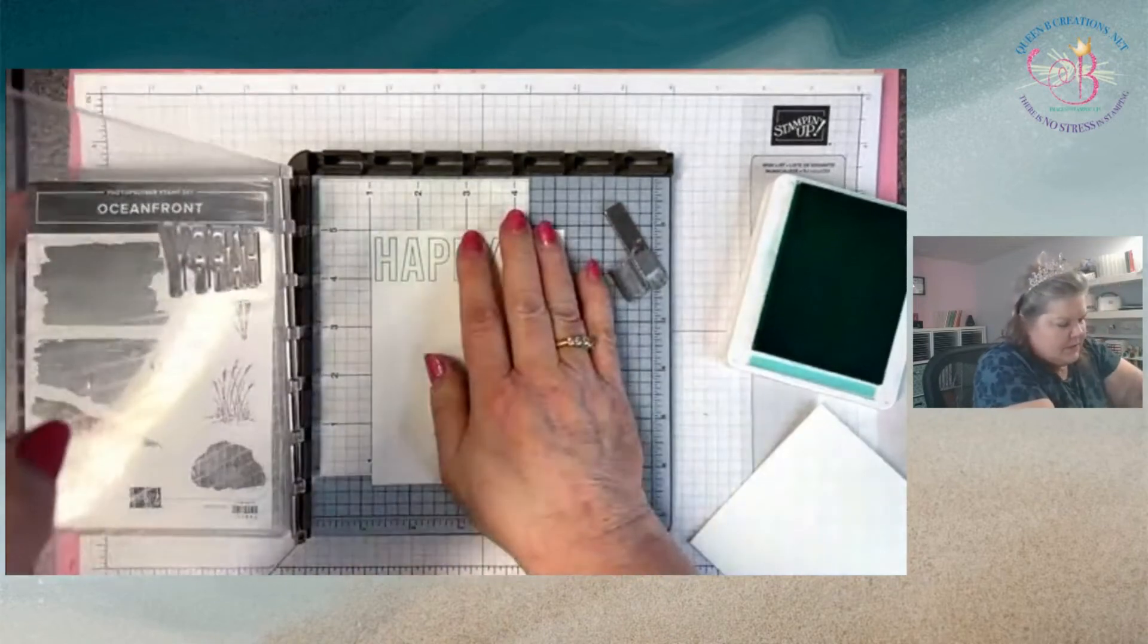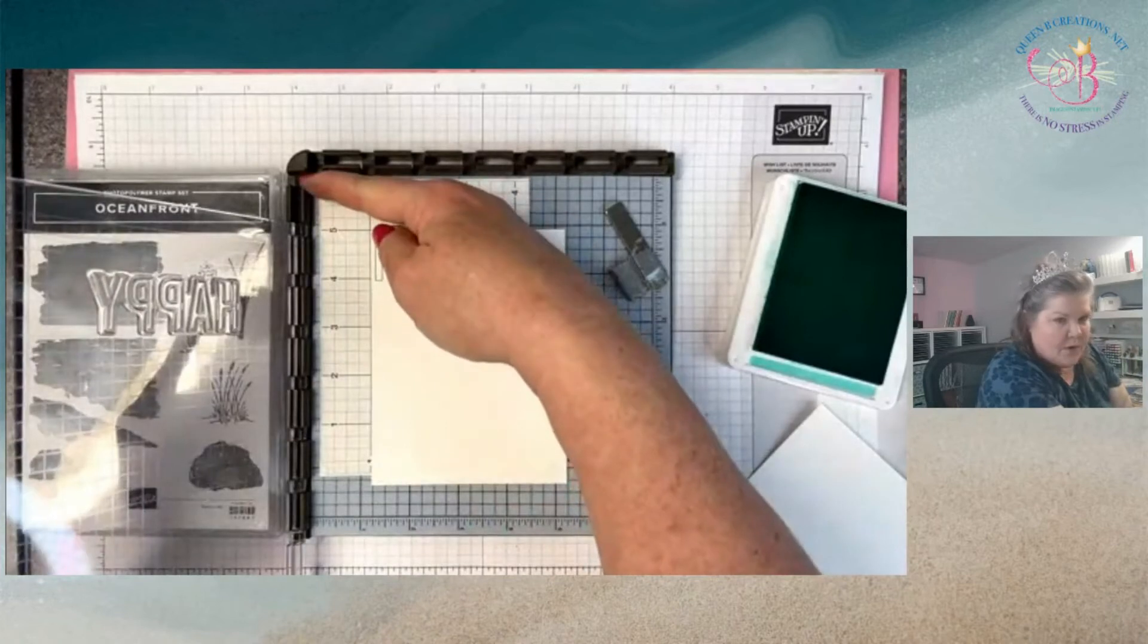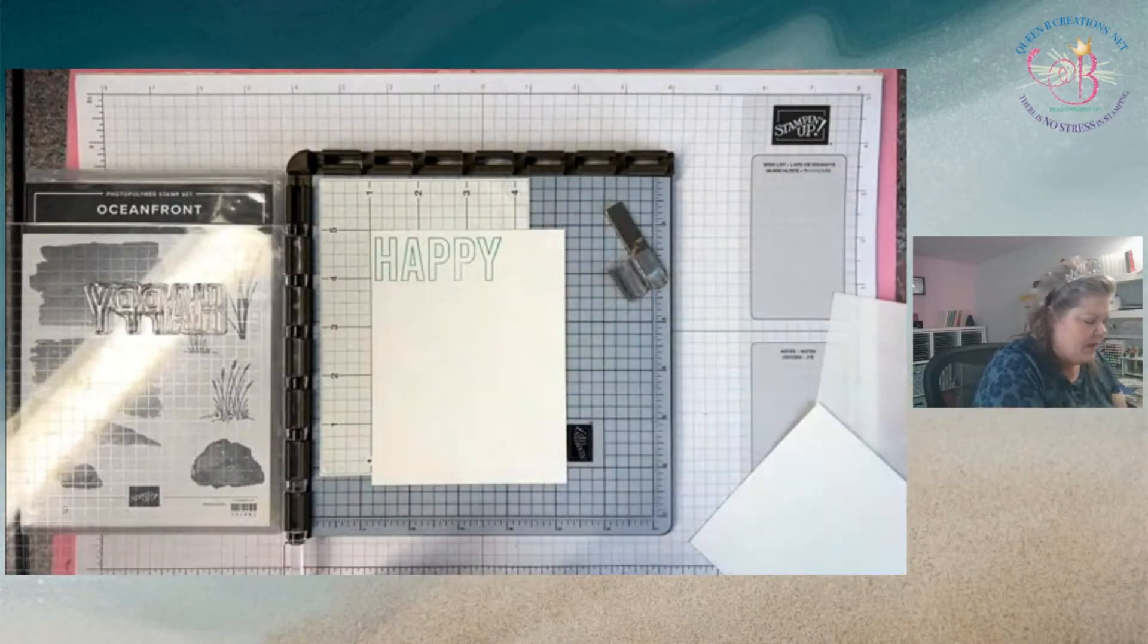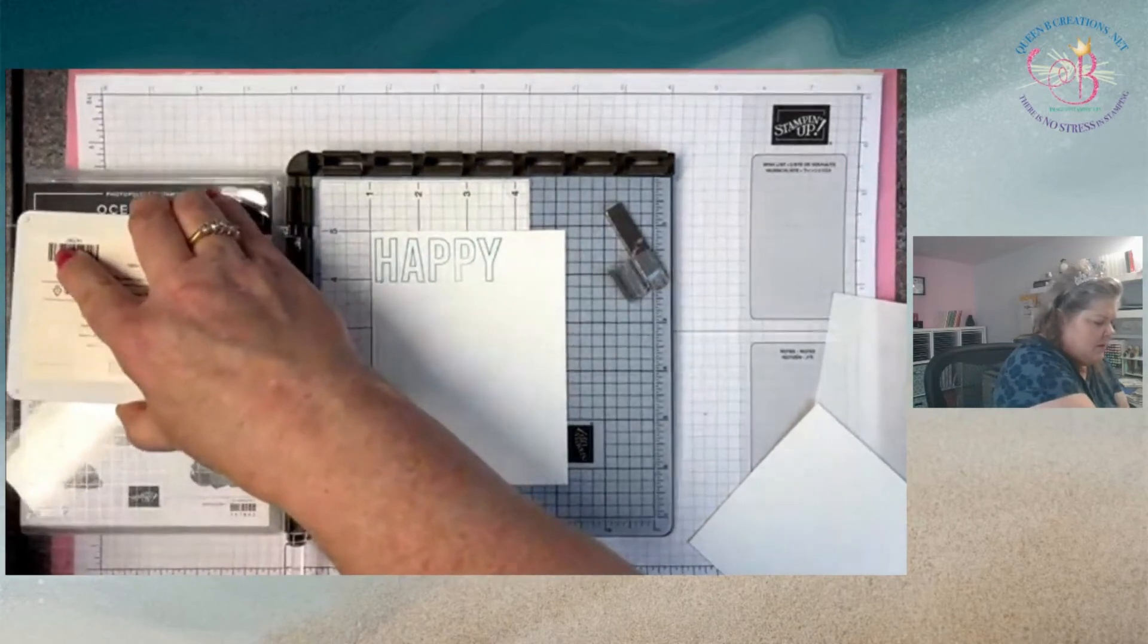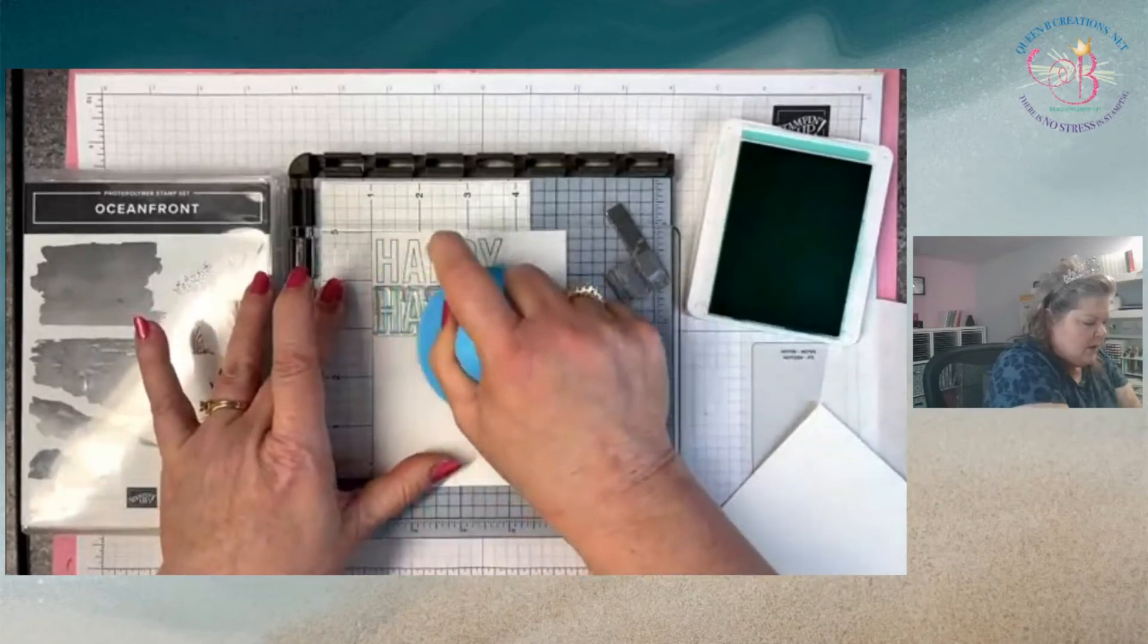But then I'm going to lift it out of the hinge and move it down one notch. See, before it was up here, now I've got it right here. And then I'm just going to do the same thing - I'm going to ink up and close and apply pressure.